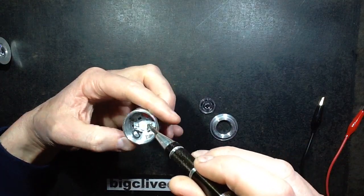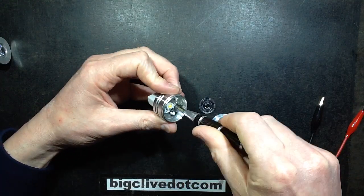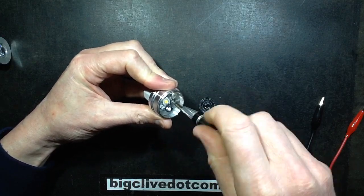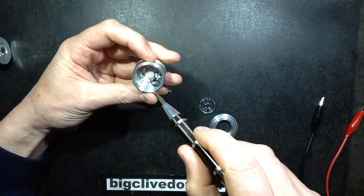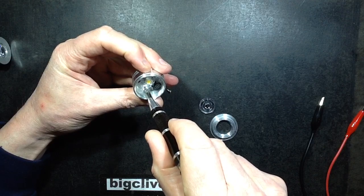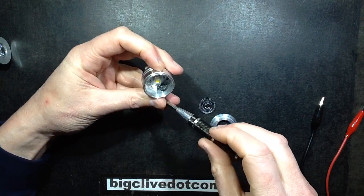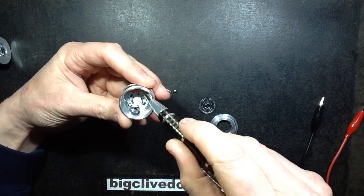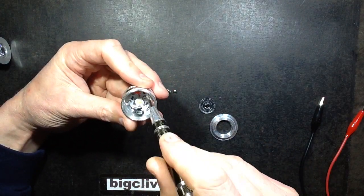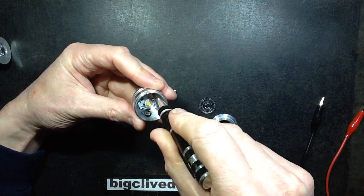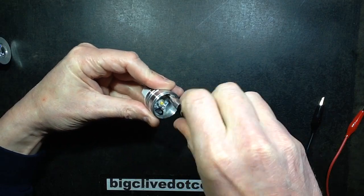There are some screws in here. I shall pop them out. One, two, and is there a third one? Yes there is. So what are we going to find inside? Probably quite a small circuit board.